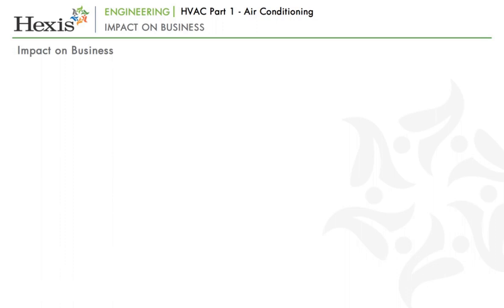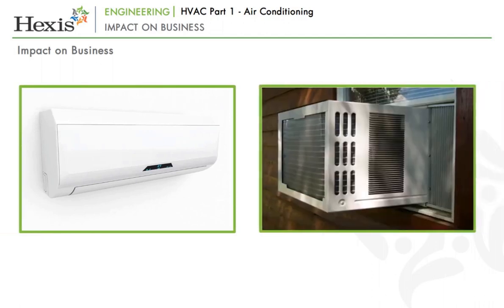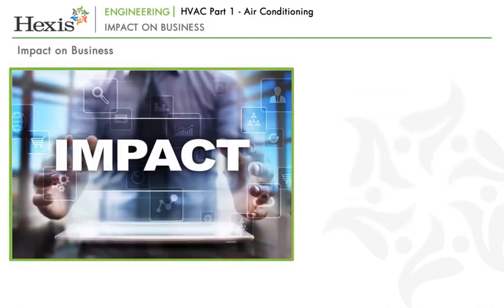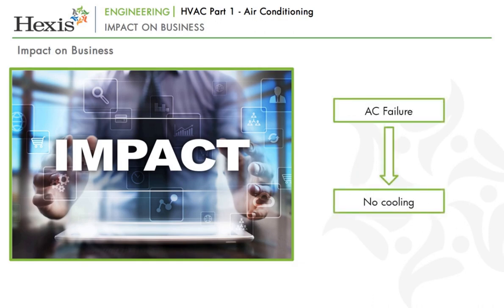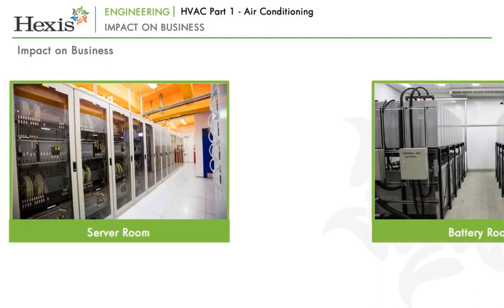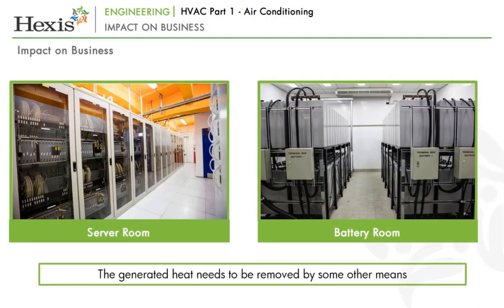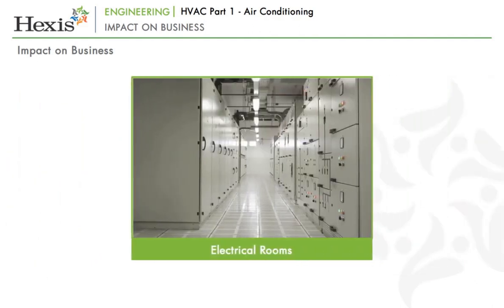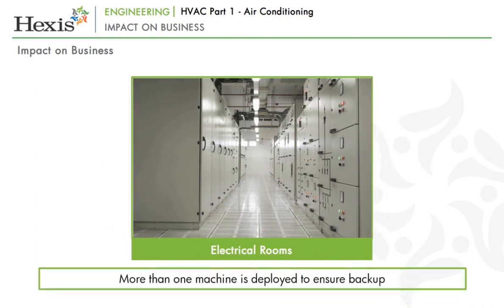Split and window ACs are usually deployed in facilities where the central AC duct cannot be provided. Improper functioning of these ACs can impact businesses in several ways. In locations where there is no other AC available, any failure will impact cooling in that room. Being smaller units, the impact will generally be local, but if it is an equipment room like a server room, battery room or switch room, the heat generated by the equipment will need to be removed by some other means. For critical areas like electrical rooms, more than one machine is normally deployed to ensure backup for continued operations.